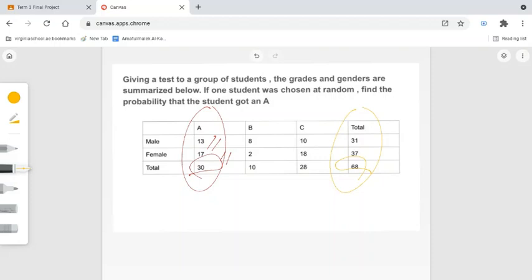And therefore, the probability that a student chosen at random would have gotten an A would be the number of students receiving an A, which is 30, divided by the number of students that took the test, which is 68.